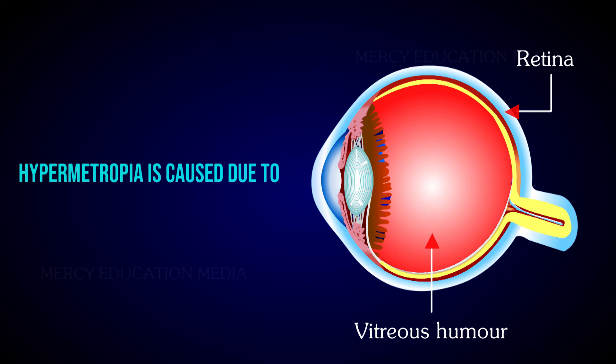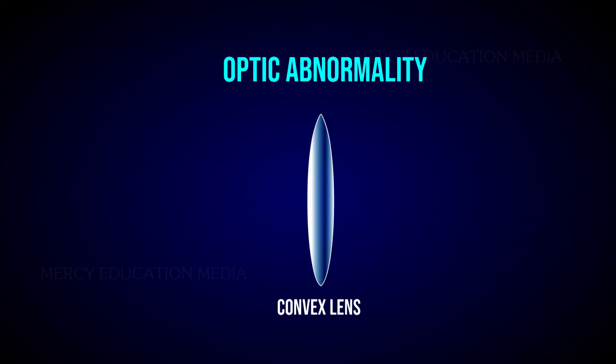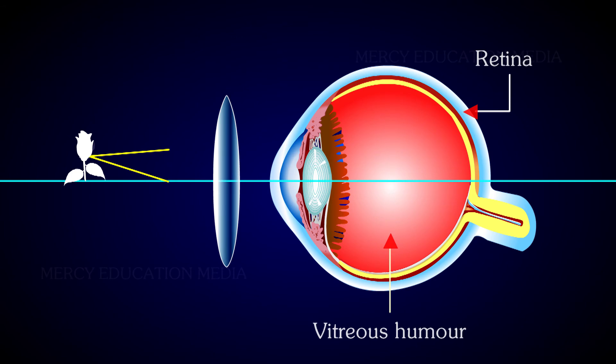Hypermetropia is caused due to shortening of the eyeball, that is the eyeball becomes smaller, or increase in the focal length of the eye lens. A convex lens is used to rectify this optic abnormality. The ray diagram shows how a convex lens helps in focusing the light on the retina.